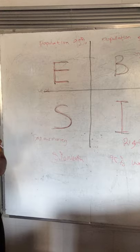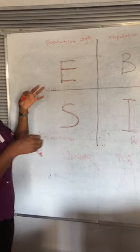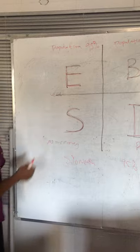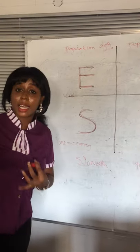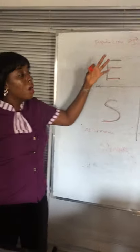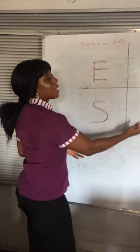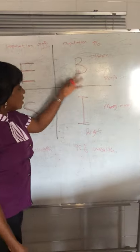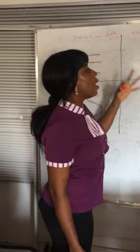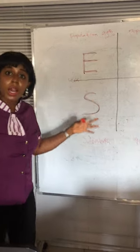What most of us have been taught — especially in our school system — is how to be on the left side. You're either trained in school to be a good employee, to graduate and get a good job, or if you get tired of that, you hop into the self-employed quadrant where you exchange your time for money. On the right side, they have people working for them and their money working for them.